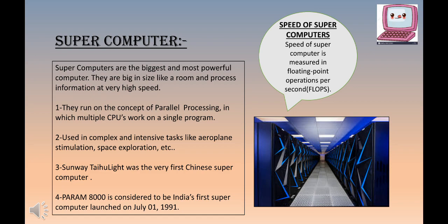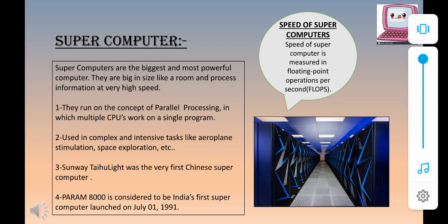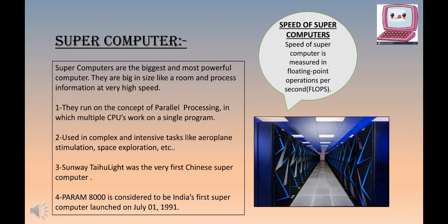An important note: supercomputers run on the concept of parallel processing. Parallel processing is the process in which multiple CPUs work on a single program simultaneously. While a regular system might buffer and keep us waiting, a supercomputer has multiple CPUs all working on the same program at once — like runners moving in parallel on a track. This is known as parallel processing.